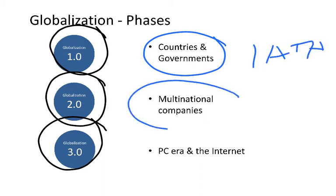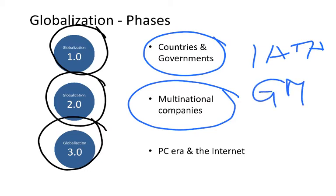In globalization 2.0, multinational companies were the main driver. We can think of international companies coming from the US to other countries, such as IBM or General Motors. By having General Motors in the US and in other countries, someone in America as well as someone in Europe, for instance, could drive the same car.